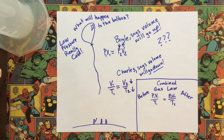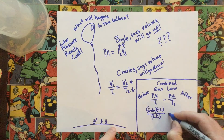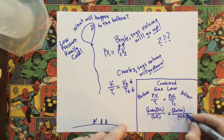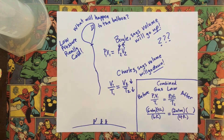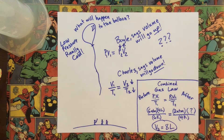The combined gas law is PV over T before equals PV over T afterwards. Plugging in the numbers — using some fake numbers to make the math easier — after cross-multiplying, the new volume is eight liters. For this hypothetical situation, the volume went from four to eight liters, and Boyle's is the one who won.